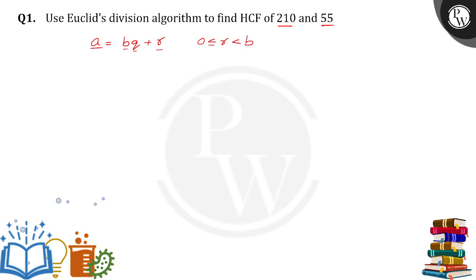So here, out of the two numbers 210 and 55, we're taking A equals 210 and B equals 55. If you know how to do it, Euclid's division is very simple.